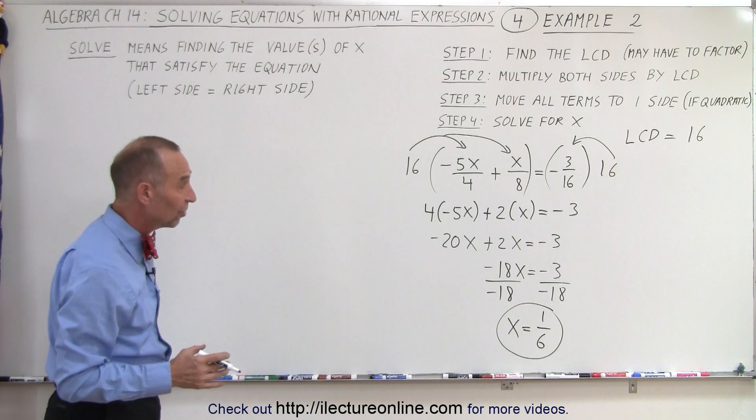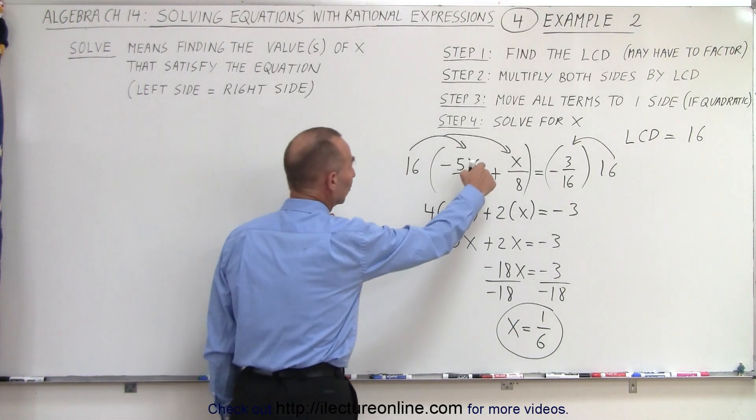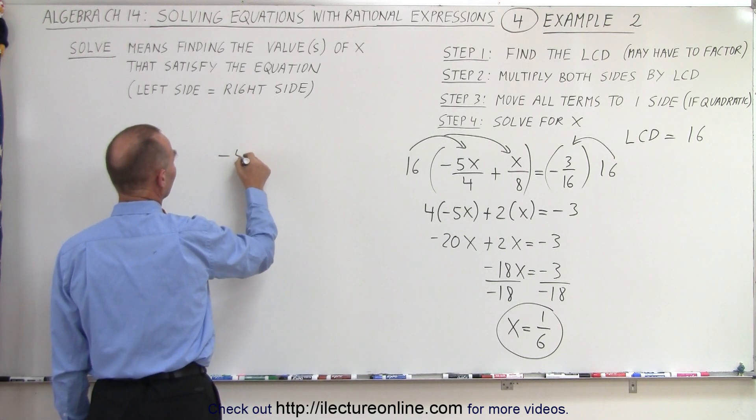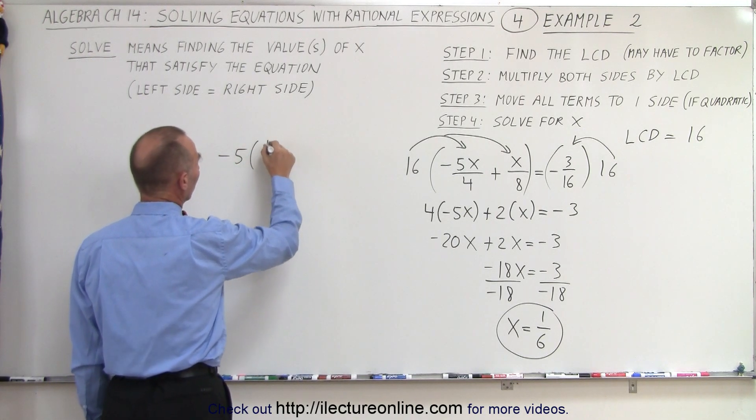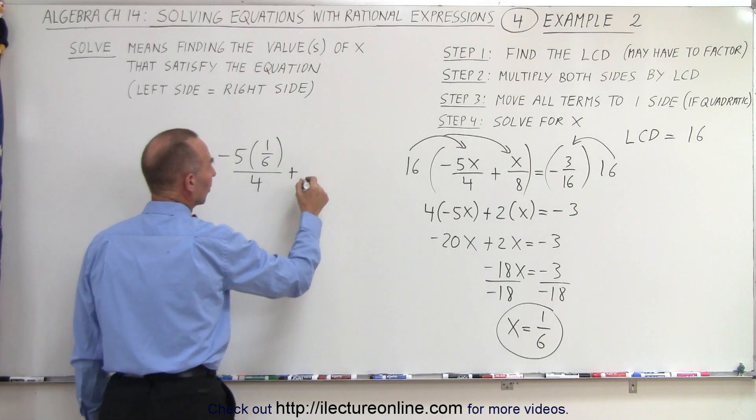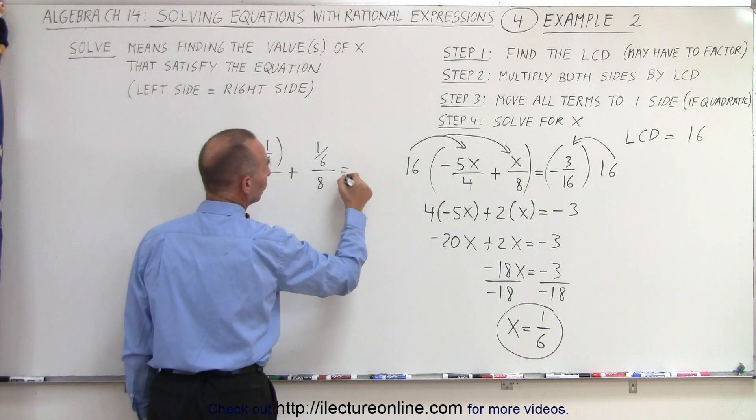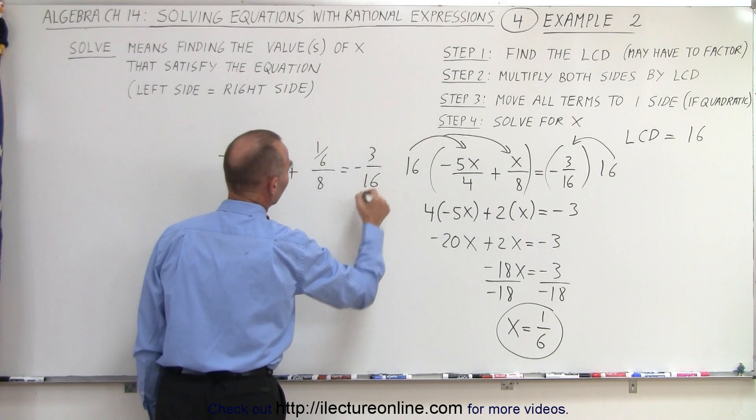Now of course, we should check to see if this is indeed correct. So we're going to plug that back in our original equation and see what we get. Minus 5 times x, which is 1 over 6, divided by 4, plus 1 over 6, divided by 8, is equal to negative 3 over 16.